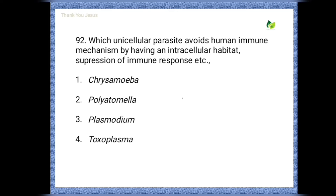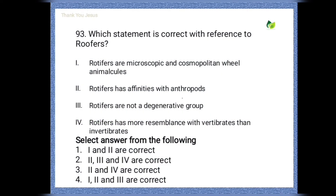Next question: which unicellular parasite avoids human immune mechanism by having an intracellular habitat and suppression of immune response? Options are: Chrysamoeba, Polytomella, Plasmodium, Toxoplasma. The correct option is Plasmodium.